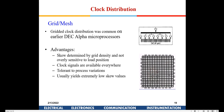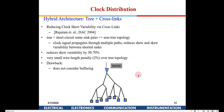That means two metal layers are lost for the clock grid. You can also have hybrid architectures — for example, an H-tree combined with cross-links, meaning you take an H-tree and then short certain connections. A study by Rajaram found that by shorting at certain locations far apart, you can reduce skew variability by 30 to 70 percent with only a small additional wiring penalty.